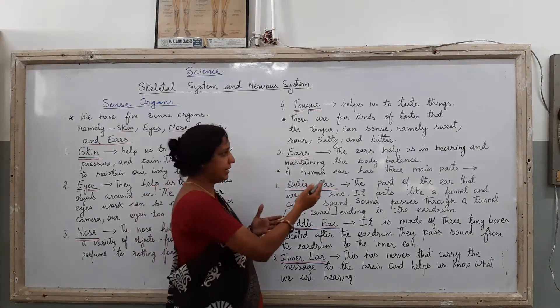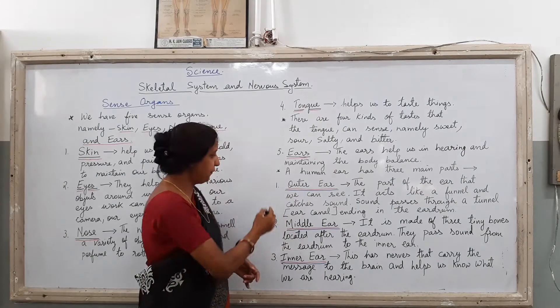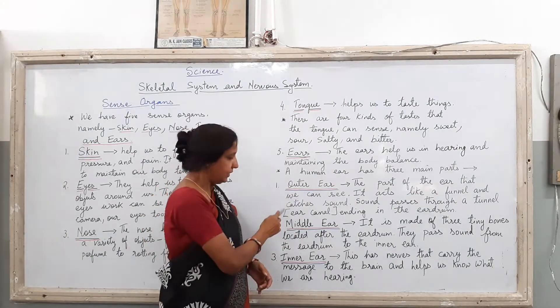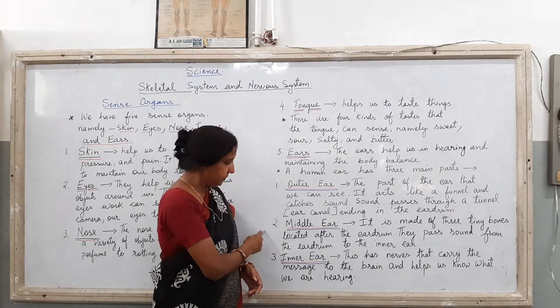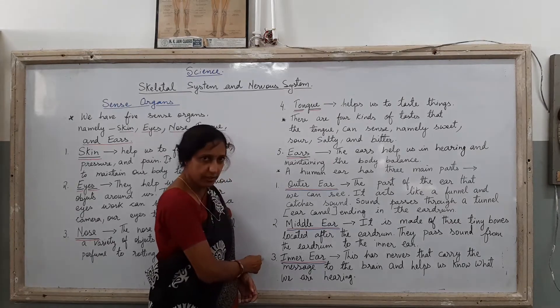A human ear has three main parts. The first one is the outer ear, the second one is the middle ear and the third one is the inner ear.